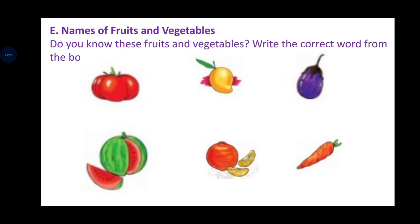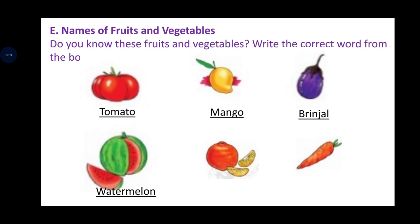Now Question E: Names of Fruits and Vegetables. We have seen names of people, things, birds and animals, and places. Now we will learn names of fruits and vegetables. Do you know these fruits and vegetables? They also have names, so they are also called naming words. Write the correct word from the box: tomato, mango, brinjal, watermelon, orange, and carrot.